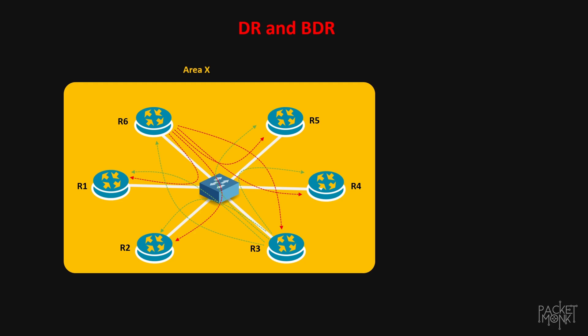To prevent this update storm, OSPF elects a router with the highest priority value as DR and the second highest priority value as BDR. Once DR and BDR are elected, all other routers exchange their full information only with DR and BDR, and they are responsible for sharing this update with the other routers in the same broadcast domain. This helps in reducing the control plane overhead.